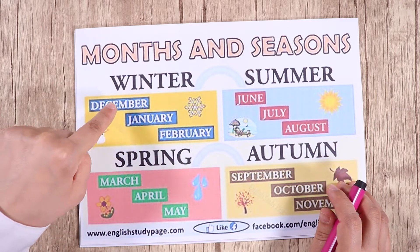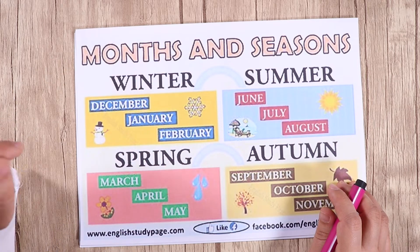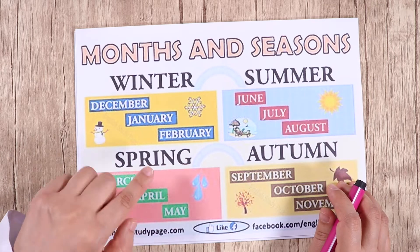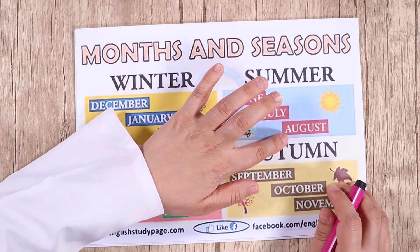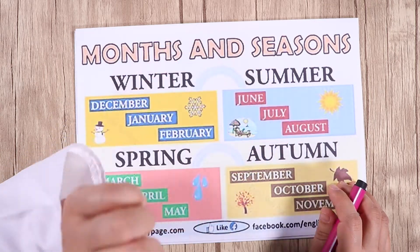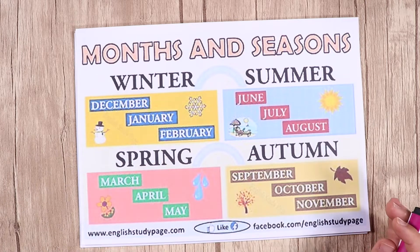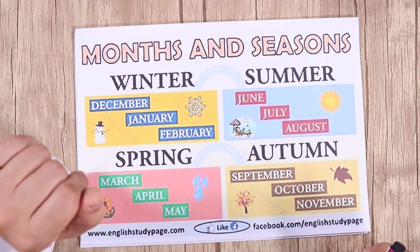Let's go through all the seasons and their months. Spring: March, April, May. Summer: June, July, August. Autumn: September, October, November. Winter: December, January, February.